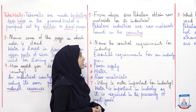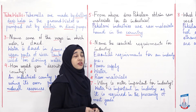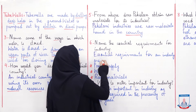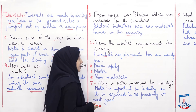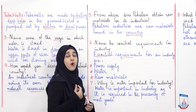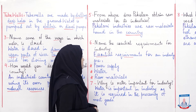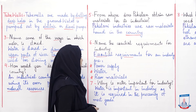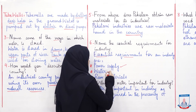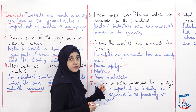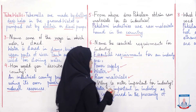Question six: name the essential requirements for industry — yani ki koi bhi industry lagane ke liye essential requirements, zaroori cheezein kya hain. Essential hum kehte hain zaroori ko; requirements hum kehte hain woh cheezein joh ke required hoti hain, chahiye hoti hain. So essential requirements for industry are: power supply, iske alawa paani — a large amount of water — and raw materials.